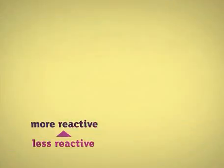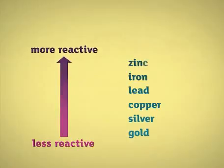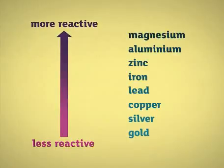The reactivity series can be used to predict which metals will displace other metals from compounds. A more reactive metal displaces a less reactive metal from its compound.